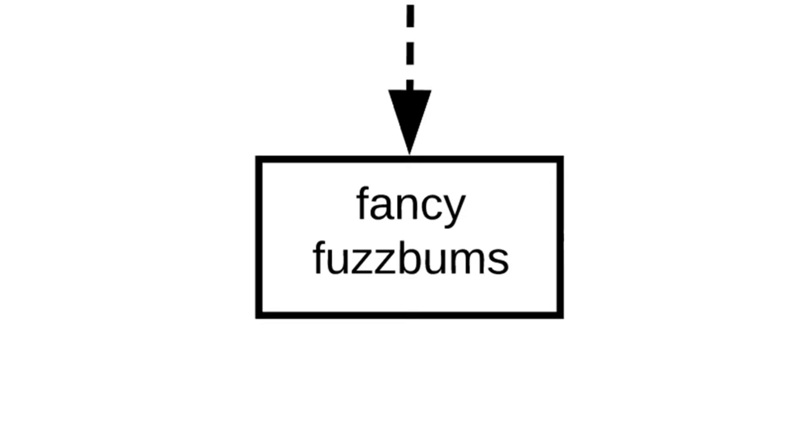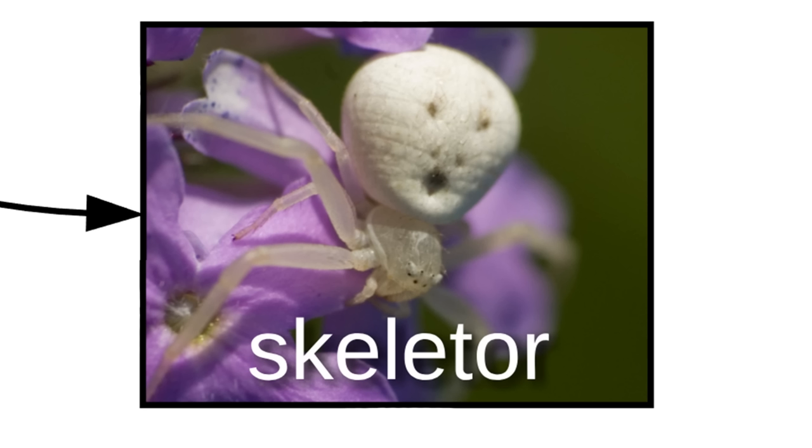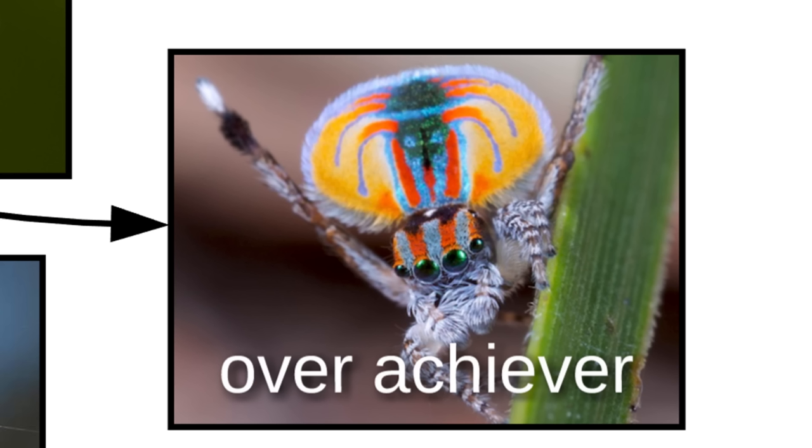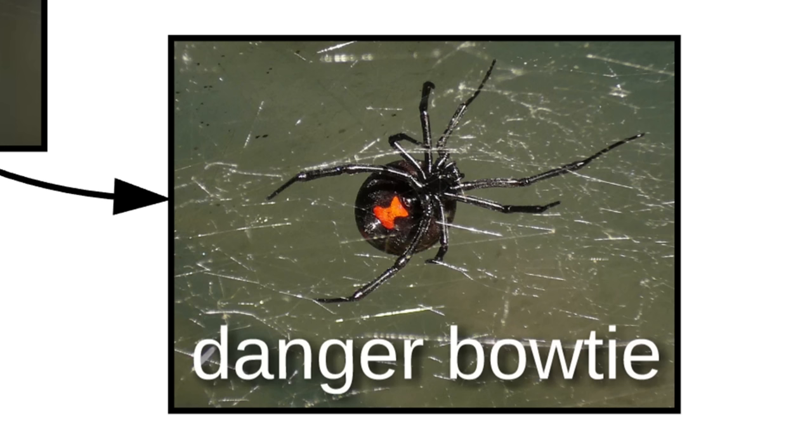Some nopes have fancy fuzzbumps, like the Happy Fanny, Skeletor, and Jason. Mr. T has an especially fuzzy fuzzbump. This one's just an overachiever. And maybe don't get too close to the danger bow tie.